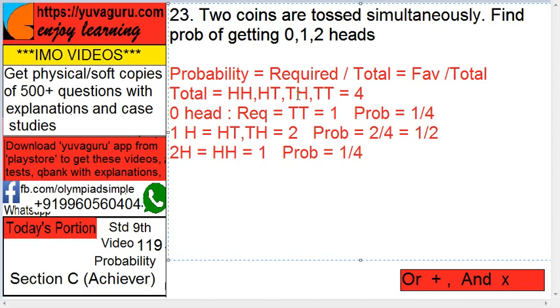So total will be four outcomes. Now zero head. Zero head means required equals to what? Only tail tail. So one. So probability is one by four.